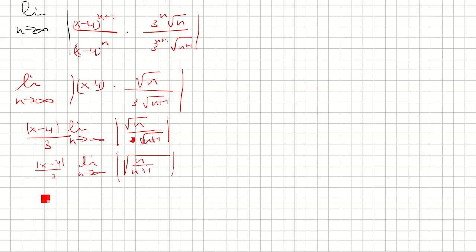But it's pretty clear that if you divide everything by n, you're just going to get the square root of 1 over 1 plus 1 over n, and that's going to go to 1.